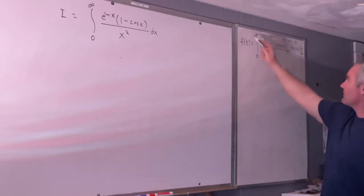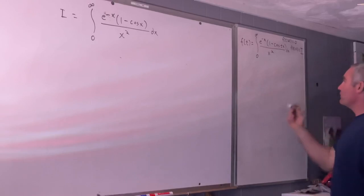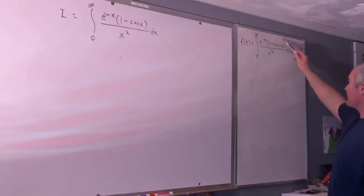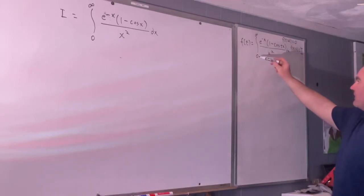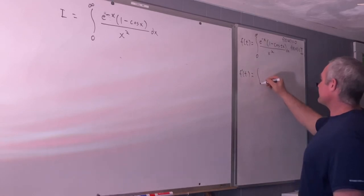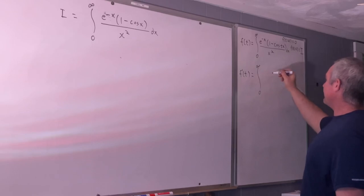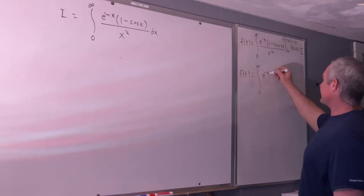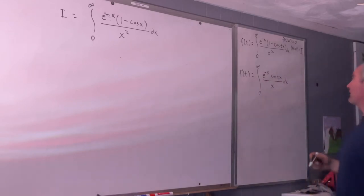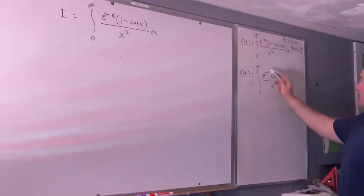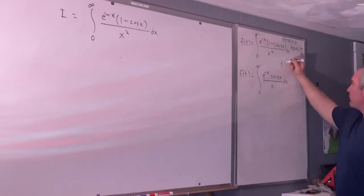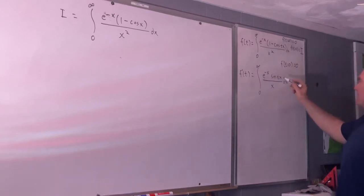Using the Leibniz rule for differentiation under the integral sign, we can take the derivative of this function of t by taking the partial derivative with respect to t of the integrand and evaluating from 0 to infinity. So f'(t) is equal to the integral from 0 to infinity of e to the negative x times sine(tx) over x dx. You can pause the video and verify that. If we evaluate f'(t) at t equals 0, we get 0 because sine of 0 is 0.